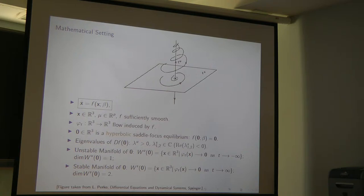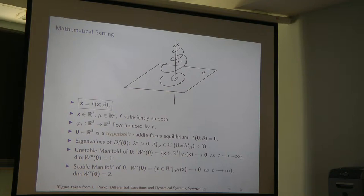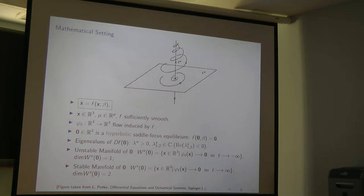We assume this equilibrium has a positive unstable eigenvalue lambda_u and a complex conjugate pair of stable eigenvalues with negative real part. We call this equilibrium a saddle-focus because it has both a repelling component and an attracting component in a spiraling fashion.